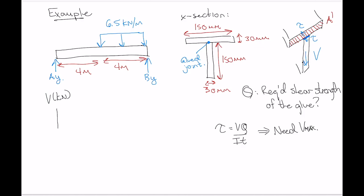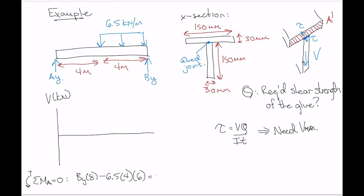We need to find the maximum internal shear force V from the shear diagram. First, finding support reactions: taking sum of moments about A equal to zero (counter-clockwise positive): B_y times 8 minus 6.5 times 4 times 6 equals zero, giving B_y equals 19.5 kilonewtons. Then sum of forces in y gives A_y.